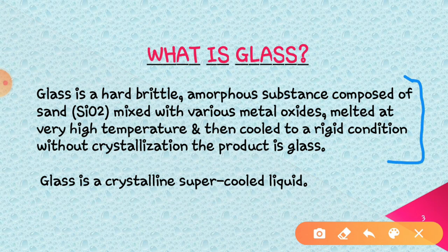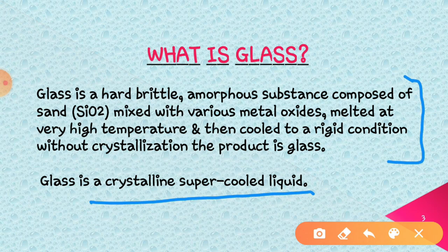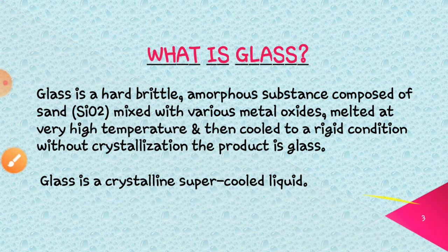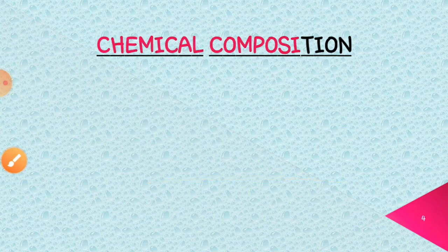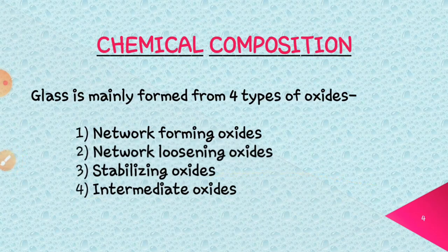Technically, we can say that glass is an inorganic product of fusion, which has cooled to a rigid condition. In very easy language, we can understand that glass is a super-cooled crystalline liquid. So this is the basic definition of glass. Now, here is the chemical composition of glass. Basically, glass is formed from four types of oxides.